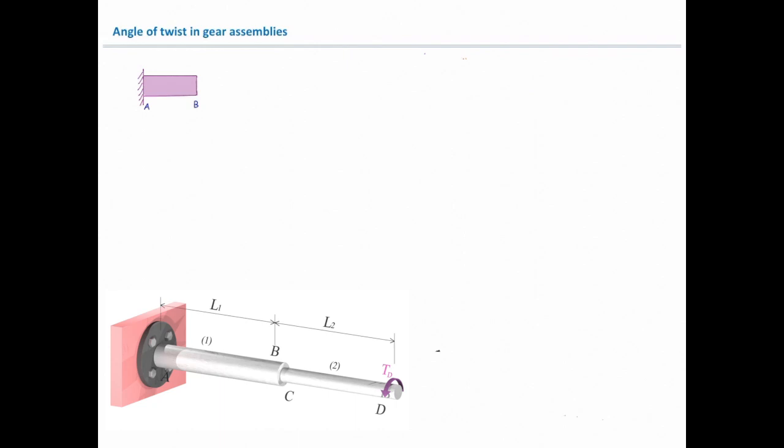To determine that, if I look at this structure from side, I would see these two elements, where the torque is applied at D, and the total twist will be a function of twist in each of these two elements. So I need to determine twist in element number 1 and element number 2.